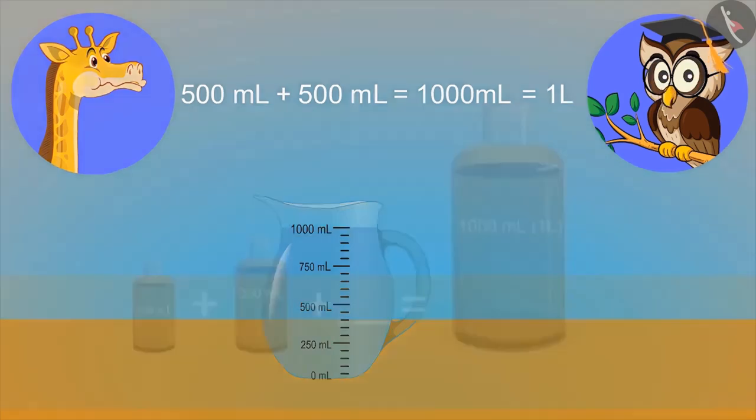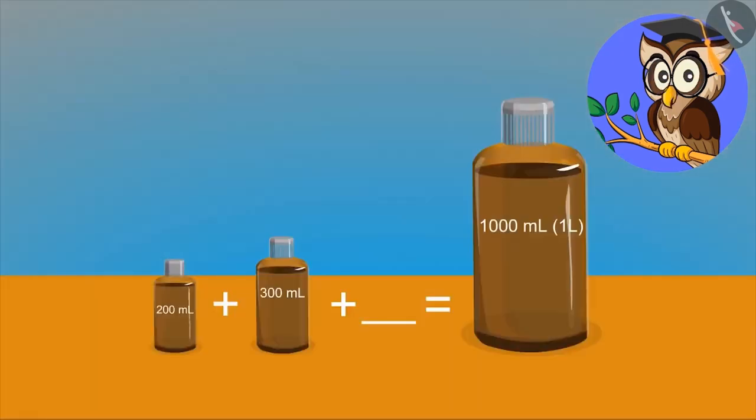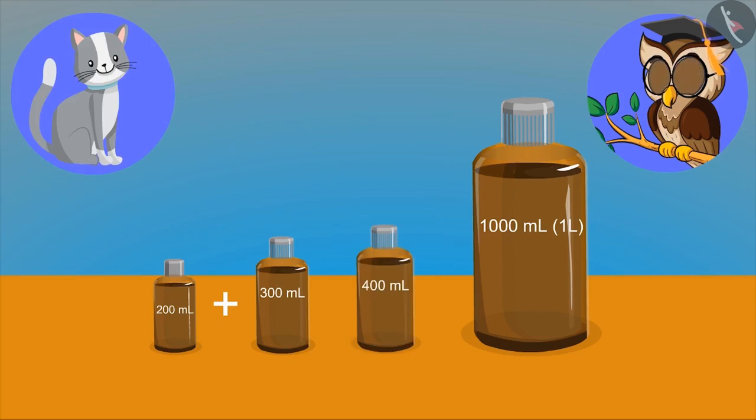Yes, correct. Now, see, in one bottle, we have 200 ml of oil and in the other, we have 300 ml of oil. Now, tell me, to fill a 1,000 ml bottle or 1 liter bottle, how much oil will you need? Is the answer 400 ml?